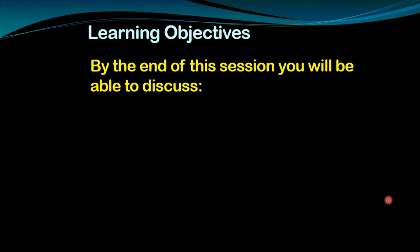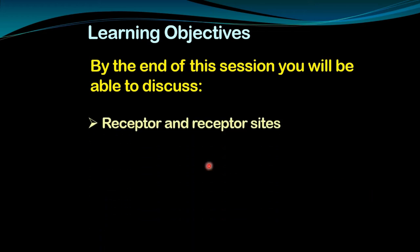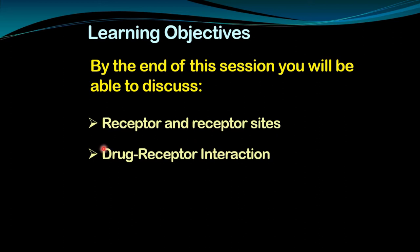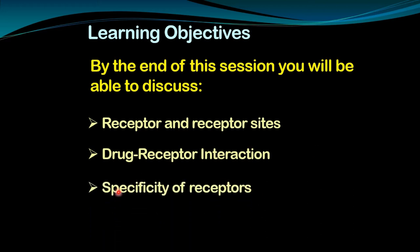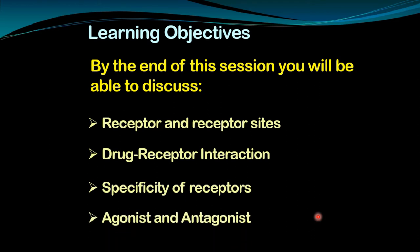Our today's session's learning objectives are: by the end of the session we will be able to discuss the receptor and receptor sites — what is a receptor, what are different receptor sites, and what are their functions. Another important objective is drug-receptor interaction — how the drug interacts with the receptor, how the drug activates the receptor. Our third objective is the specificity of the receptor, a very important and clinically significant characteristic.